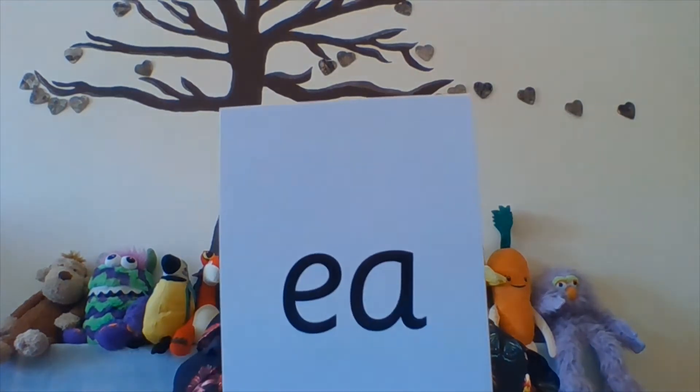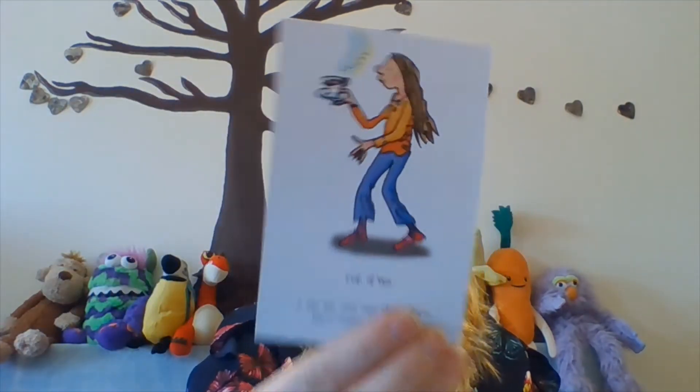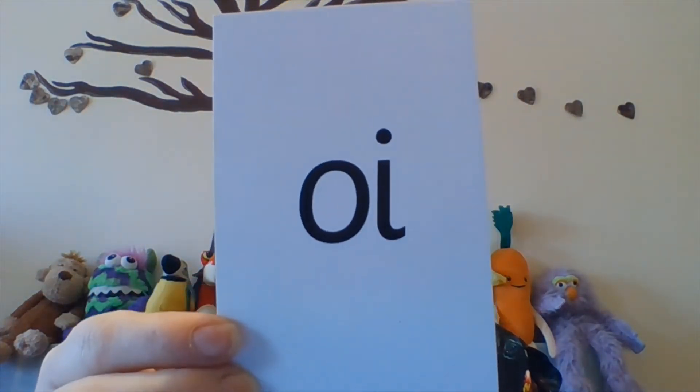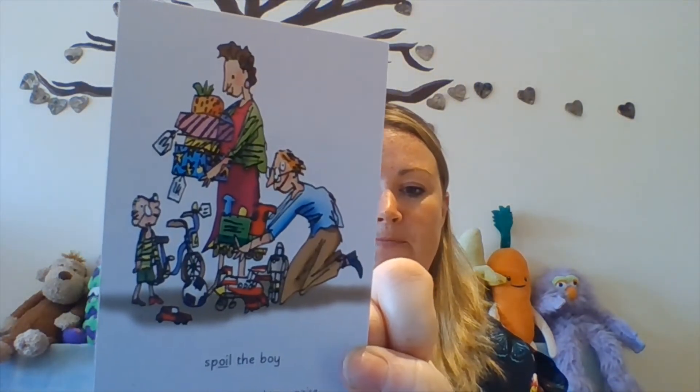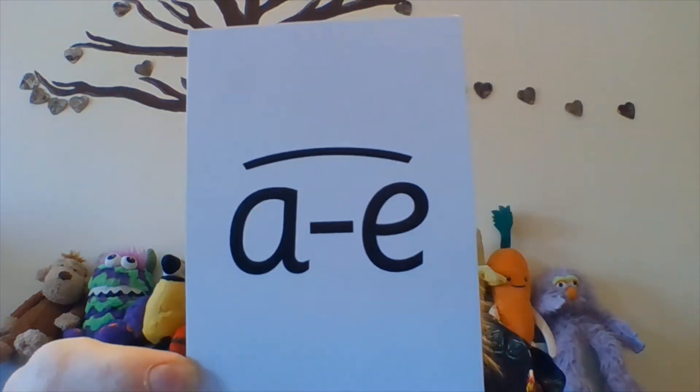Hopefully that gives you a bit of an explanation. These are the sounds in Set Three. 'ee' — cup of tea. 'oi' — spoil the boy. 'a_e' — make a cake.